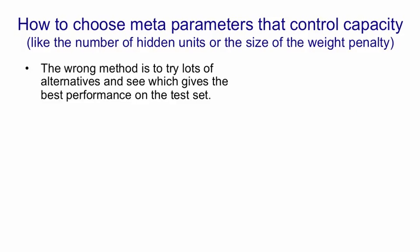An obvious way to try and set those metaparameters is to try lots of different values of one of the metaparameters, like, for example, the number of hidden units, and see which gives the best performance on the test set.